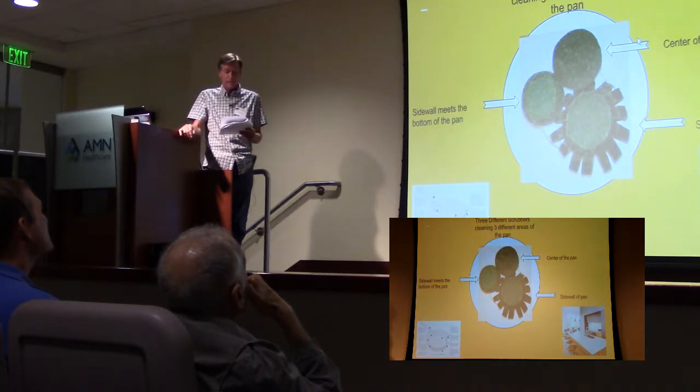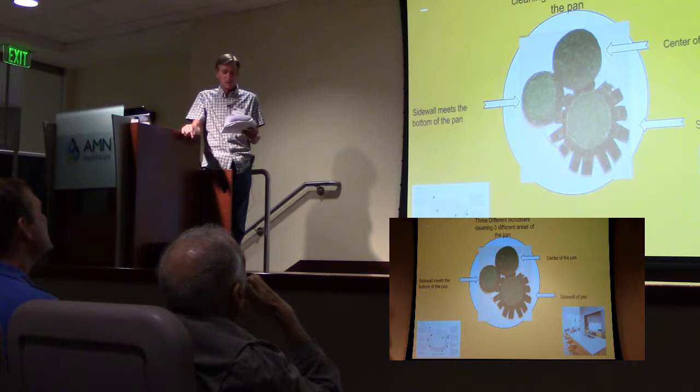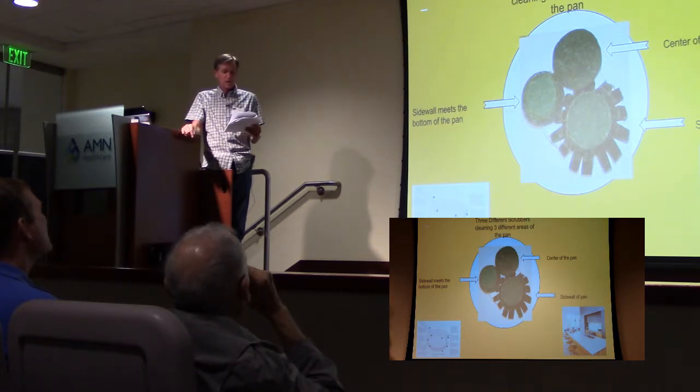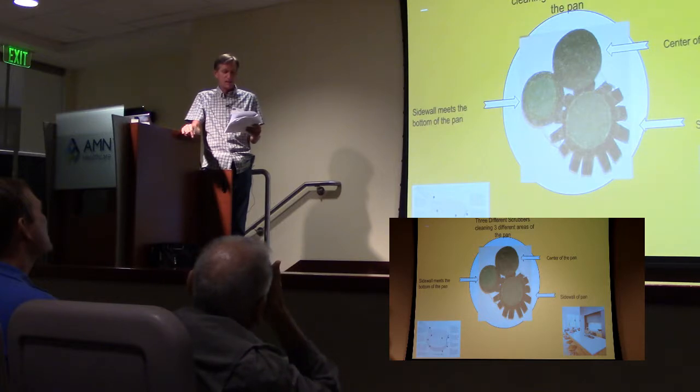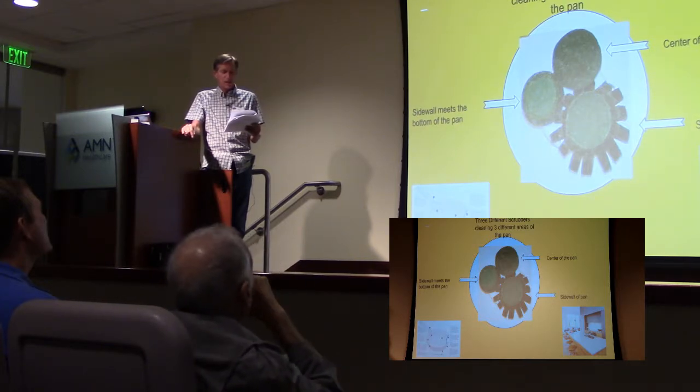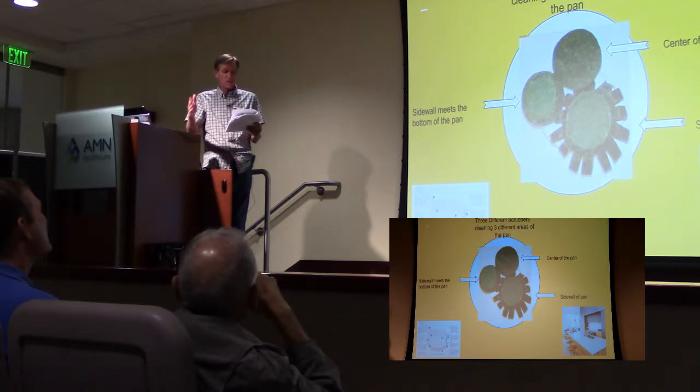So how's the whole pan cleaned? Well, there are three different scrubbers, each cleaning different areas of the pan. The center scrubber cleans the middle of the pan and halfway out to the edge of the pan. The second scrubber cleans the corner of the pan where the bottom meets the sidewall. And the third scrubber cleans the sidewall of the pan.